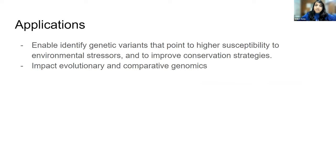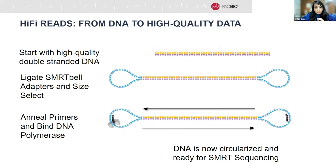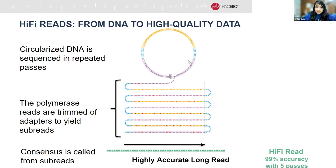This has many applications. For example, in biodiversity, it enables identification of genetic variants that point to higher susceptibility to environmental stressors and conservation strategies, and it also impacts evolutionary and comparative genomics. In PacBio HiFi sequencing, you start with high molecular weight DNA, ligate adapters, anneal primers, and the DNA is circularized. You perform sequencing in repeated passes, then perform a consensus of those reads to produce highly accurate long reads — averaging about 20 kilobase pairs in length with about 99% accuracy.